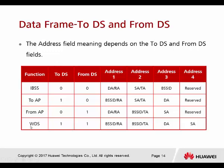The last data frame type is WDS. This happens when both To DS and From DS bits are 1. Only in this case is address field 4 used. Because we are doing WDS — wireless bridging, point-to-point — this frame indicates which AP it came from and which AP it's going to.